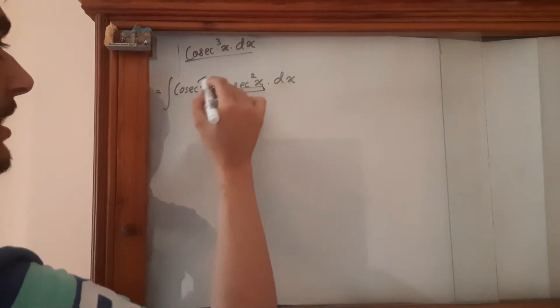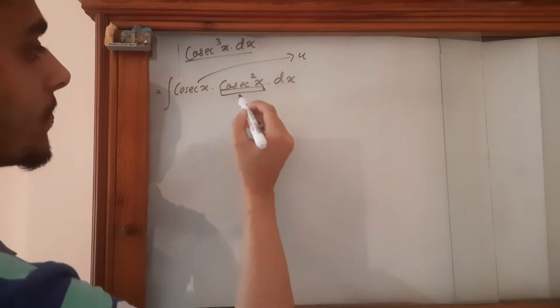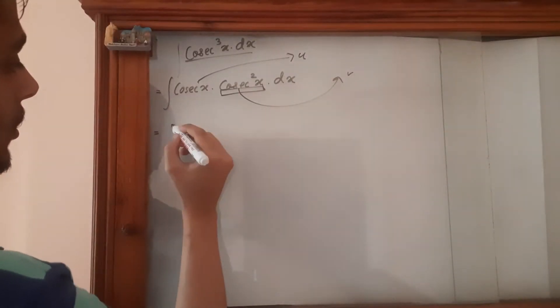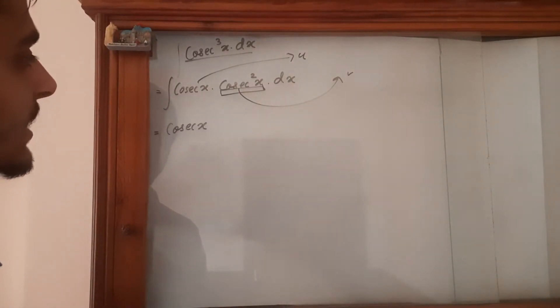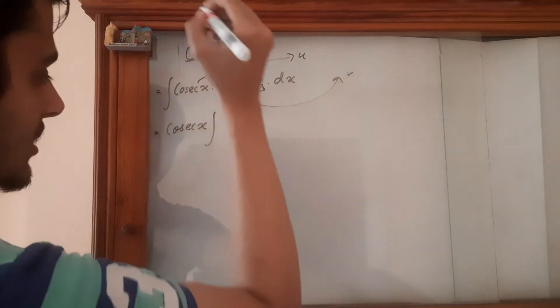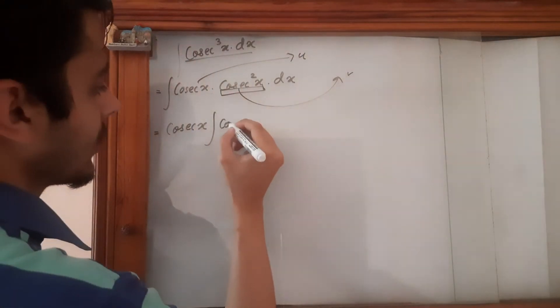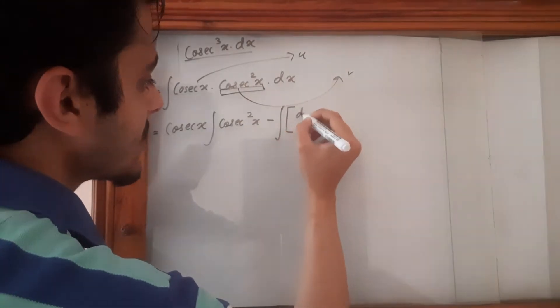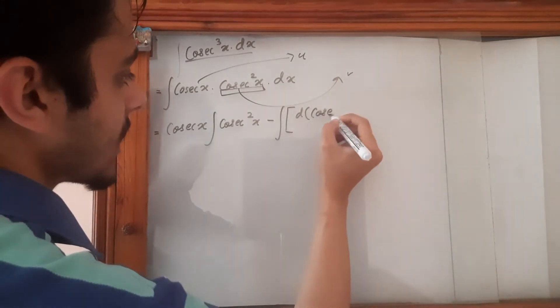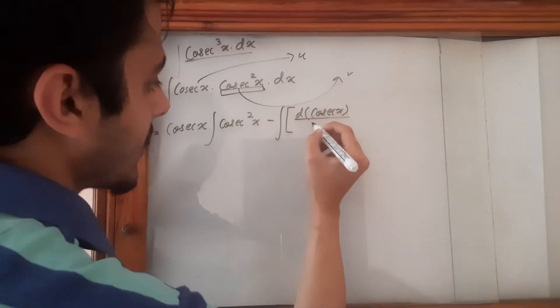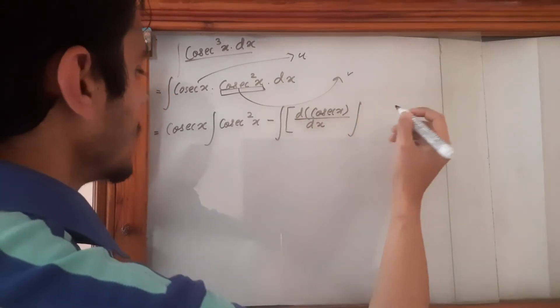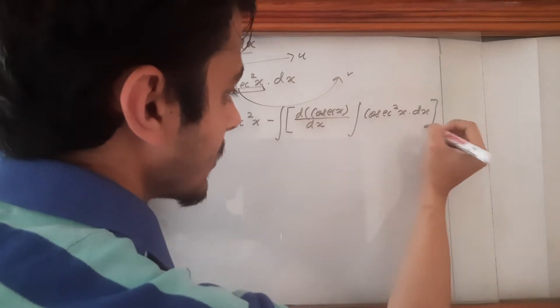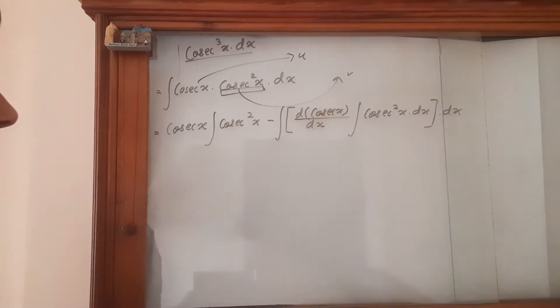So we're going to suppose this to be u and then this to be v. So let's do that. So cosec x the integration sign of course and then cosec square x minus integration sign the big bracket differentiating cosec x with respect to x and then again another integration sign cosec square x dx dx. I hope you remember this formula.